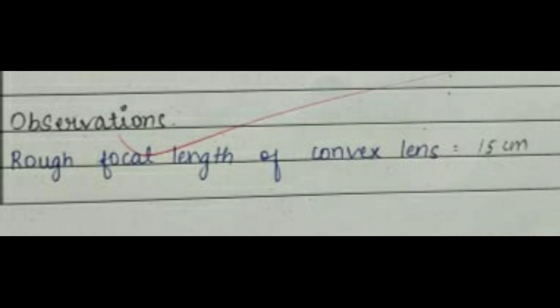This image shows the observations obtained. The rough focal length of the convex lens is 15 centimeters, which is an approximate value — we cannot get the exact value, so it is approximately equal to that.